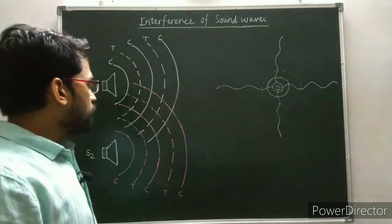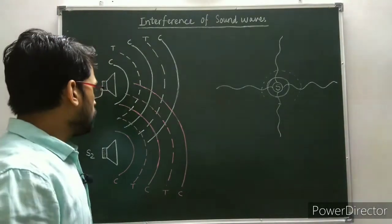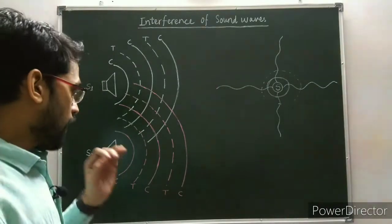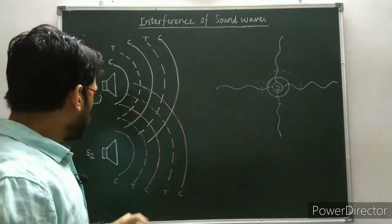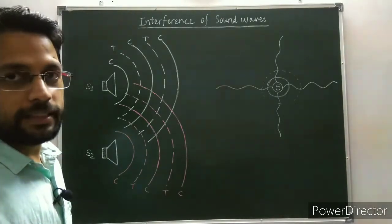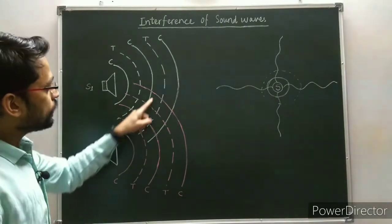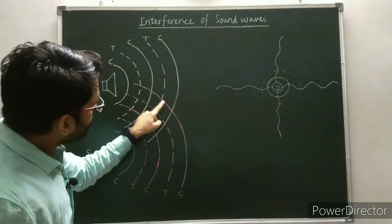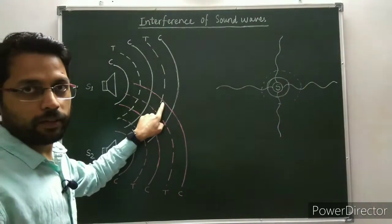When the two waves superpose in opposite phase, or out of phase, then at those points we get destructive interference or minimum intensity of sound. At those points, the crest of one wave is superposed over the trough of the other. Here in the picture, at this point the trough of the first wave is superimposed over the crest of the second wave, so at this point we get minimum intensity or destructive interference.